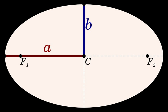The major and minor axes are the axes of symmetry for the curve. In an ellipse, the minor axis is the shorter one; in a hyperbola, it is the one that does not intersect the hyperbola.